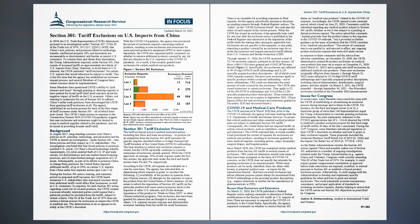Subsequently, as part of its efforts to pressure China to change these practices, the United States imposed additional tariffs of up to 25% on certain U.S. imports from China under four separate actions, per Lists 1 to 4. During the Section 301 notice, hearing, and comment period on proposed tariff increases, the USTR heard from numerous U.S. stakeholders who expressed concerns about how additional tariffs could affect their businesses as well as U.S. consumers. In response, for each Section 301 action regarding a new list of covered products, the USTR created a process whereby interested parties could request that a particular product be excluded from the tariffs, subject to certain criteria.